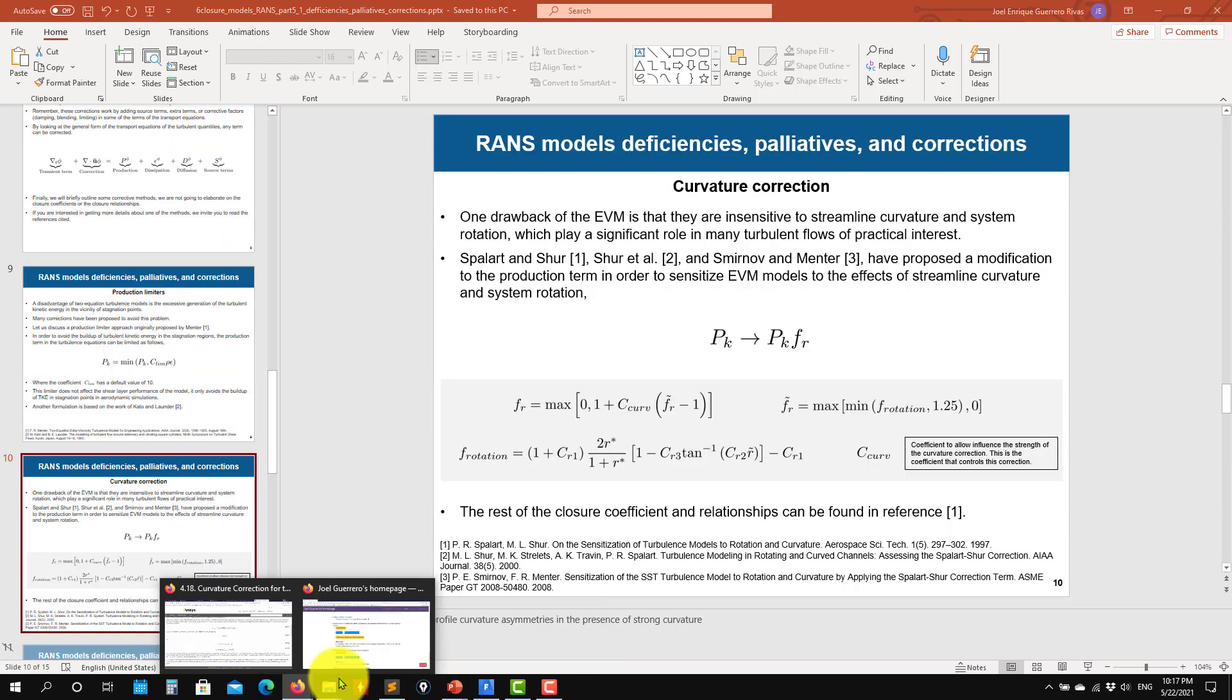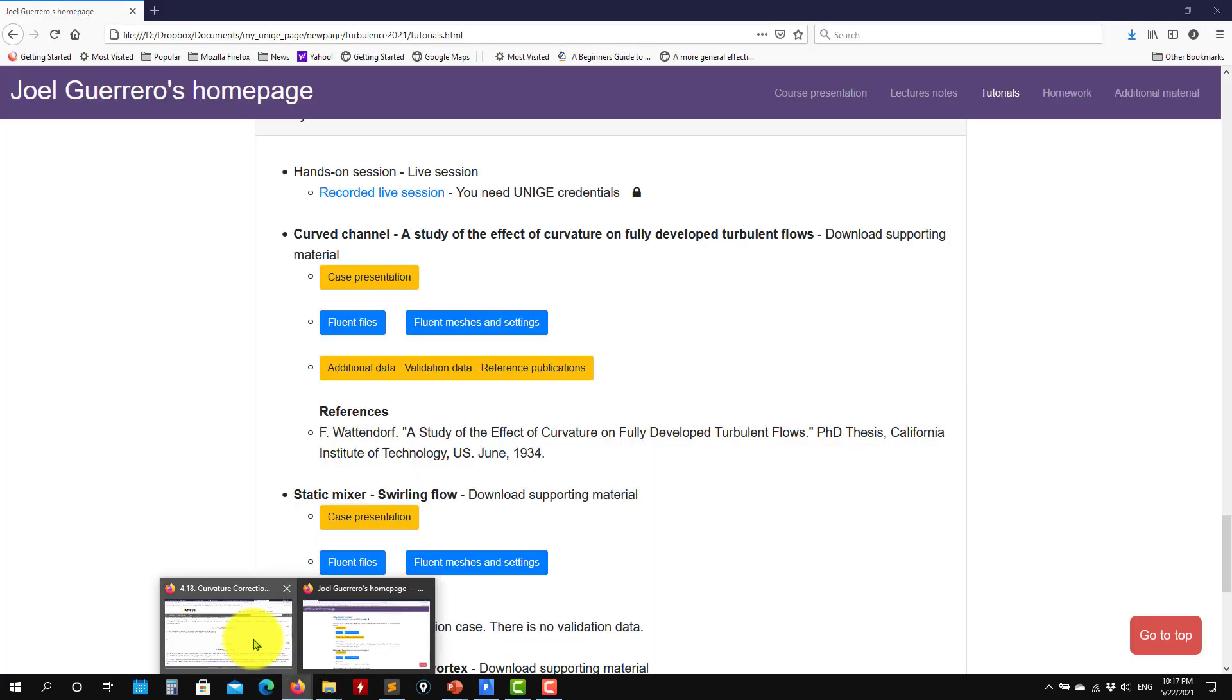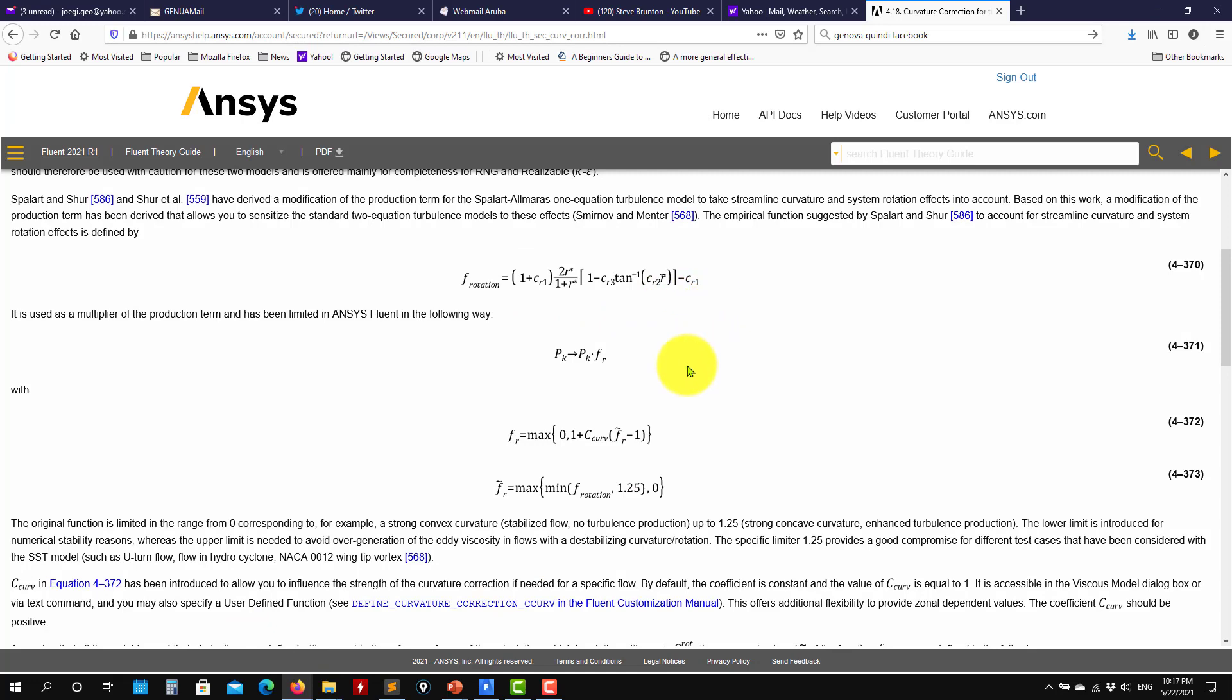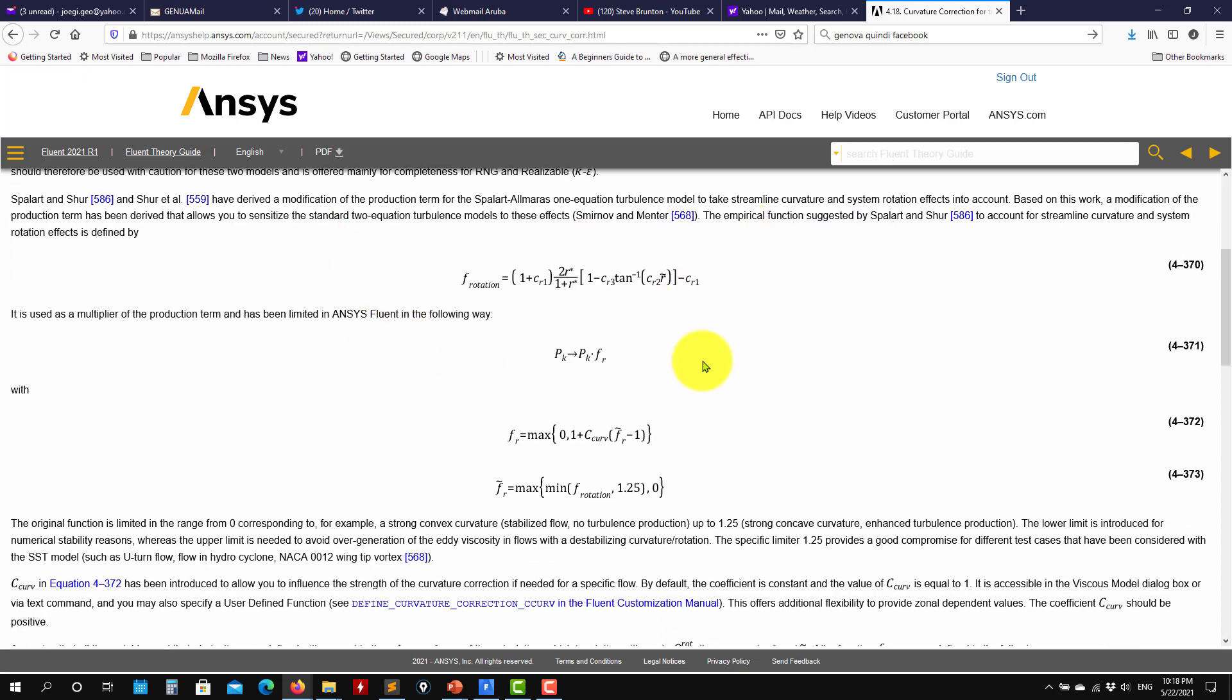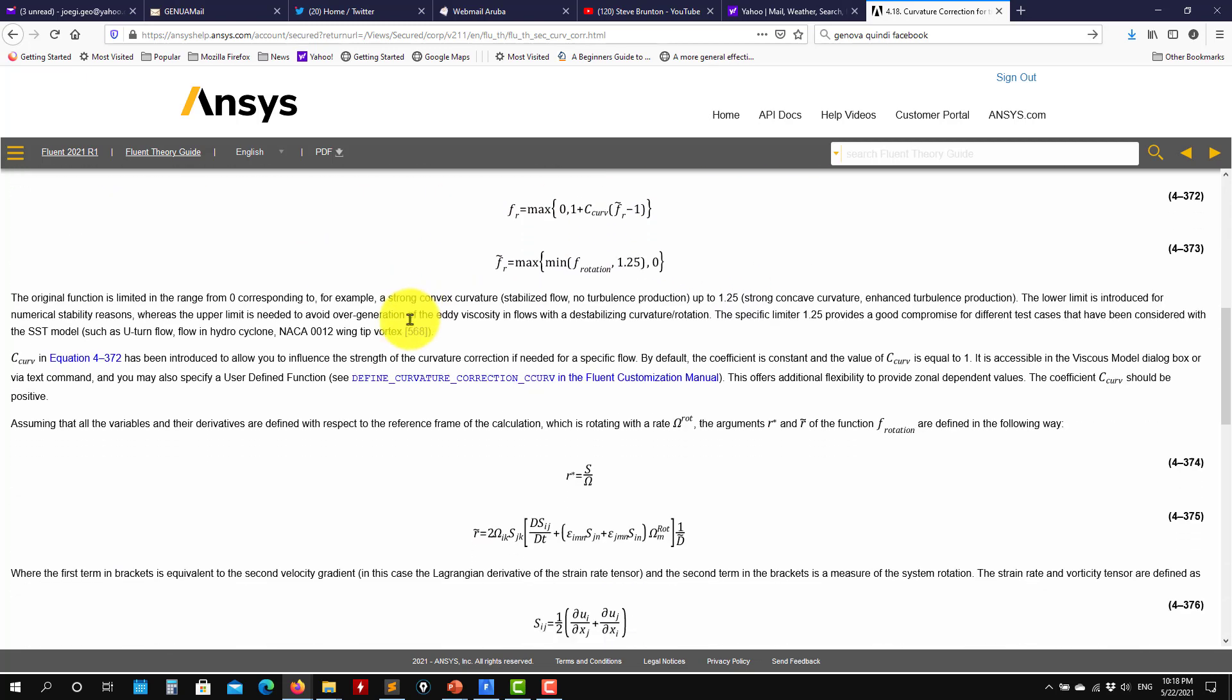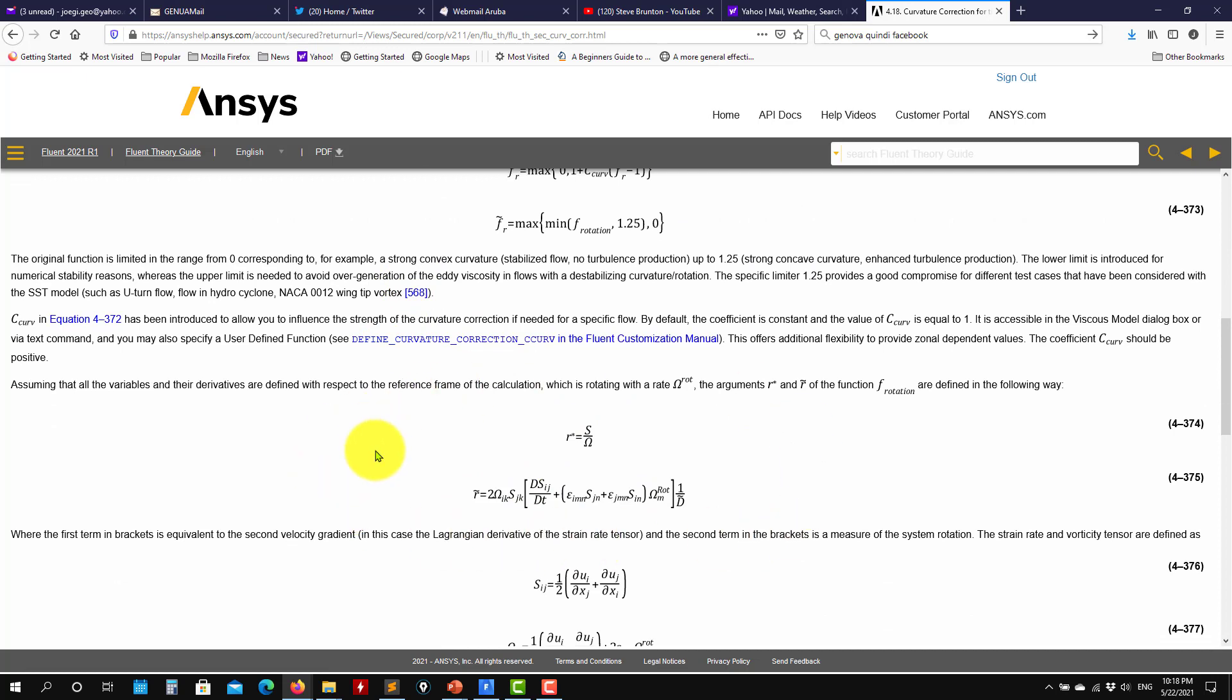So I always advise you to read the documentation. So here I open it. Fluent documentation. So see here that probably you have a little bit longer explanation, but it's the curvature correction, but basically see that here you have these two quantities and see that they depend on strain rate and the spin tensor.